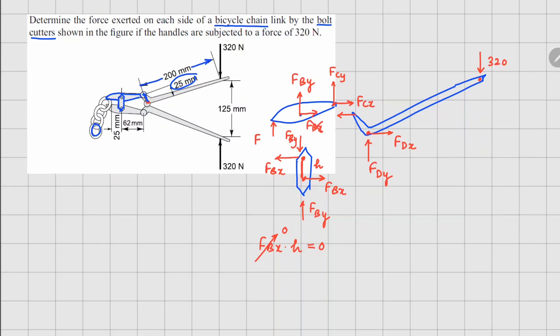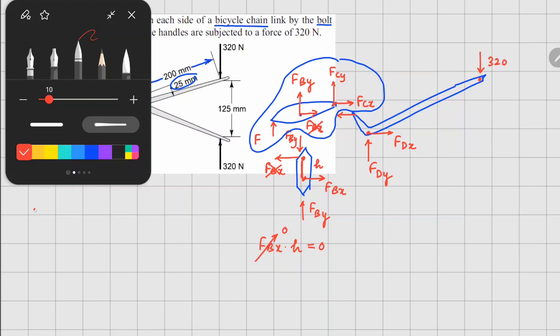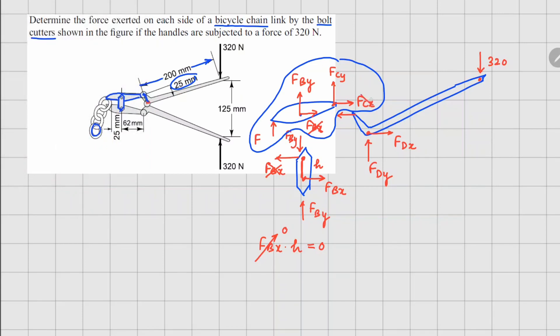I can ignore this force and I can ignore this force here. Similarly if I look at this one, in this part there is only one force that is FCx in the x direction. For force balance in the x direction, this also needs to disappear so FCx is going to be zero.